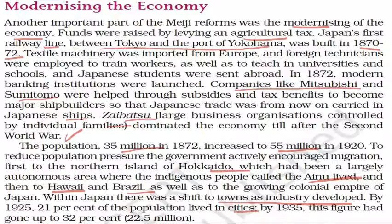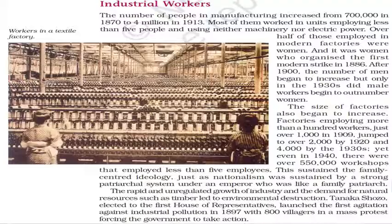Regarding industrial workers, the number of people in manufacturing increased from 700,000 in 1870 to 4 million in 1913. Most of them worked in units employing fewer than five people, using neither machinery nor electric power. Over half of those employed in modern factories were women, and it was women who organized the first modern strike in 1886. After 1900, the number of men began to increase, but only in the 1930s did male workers begin to outnumber women. The size of factories also began to increase.